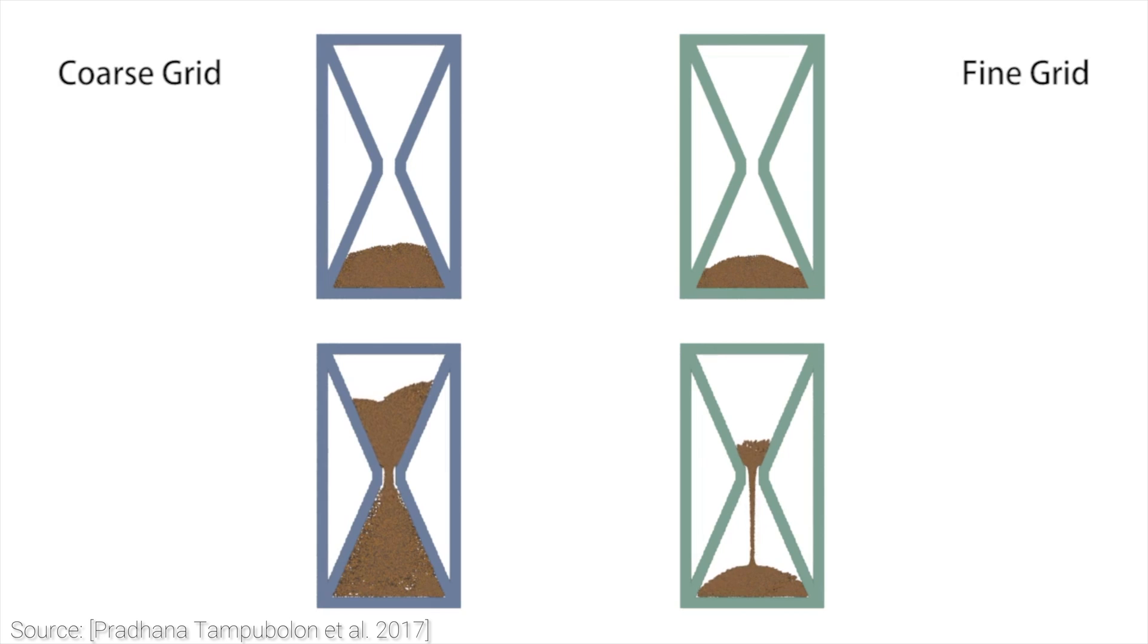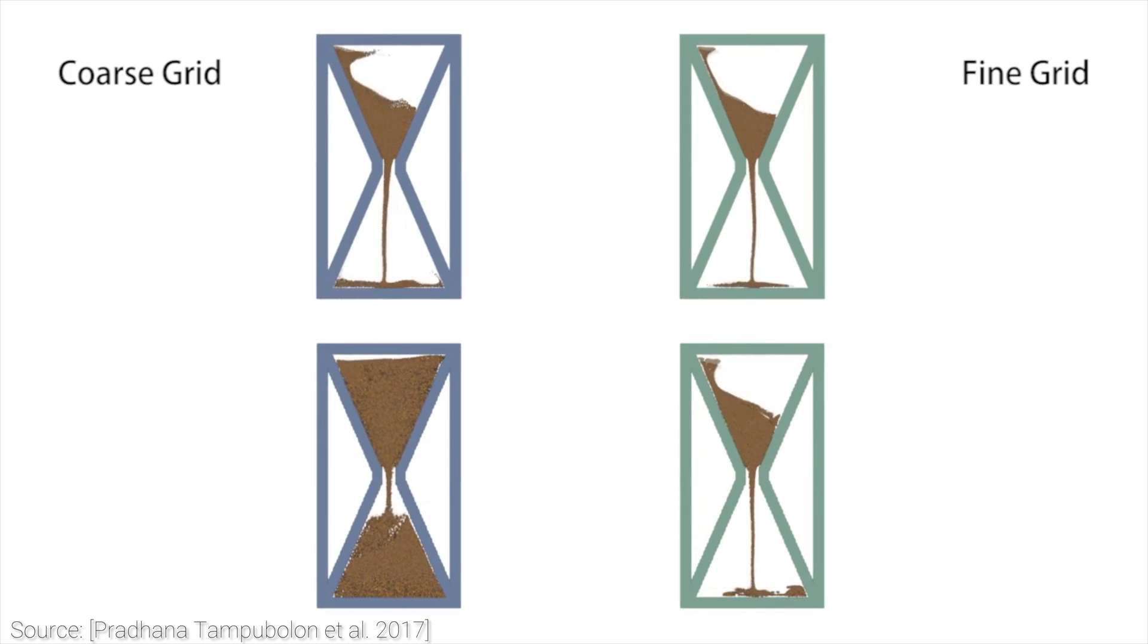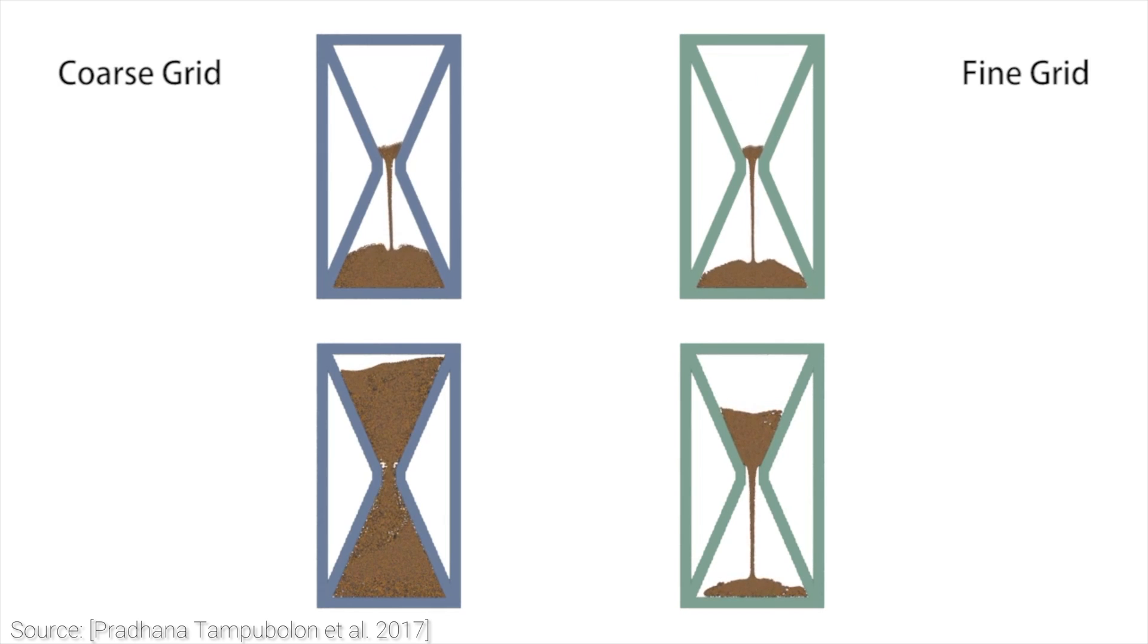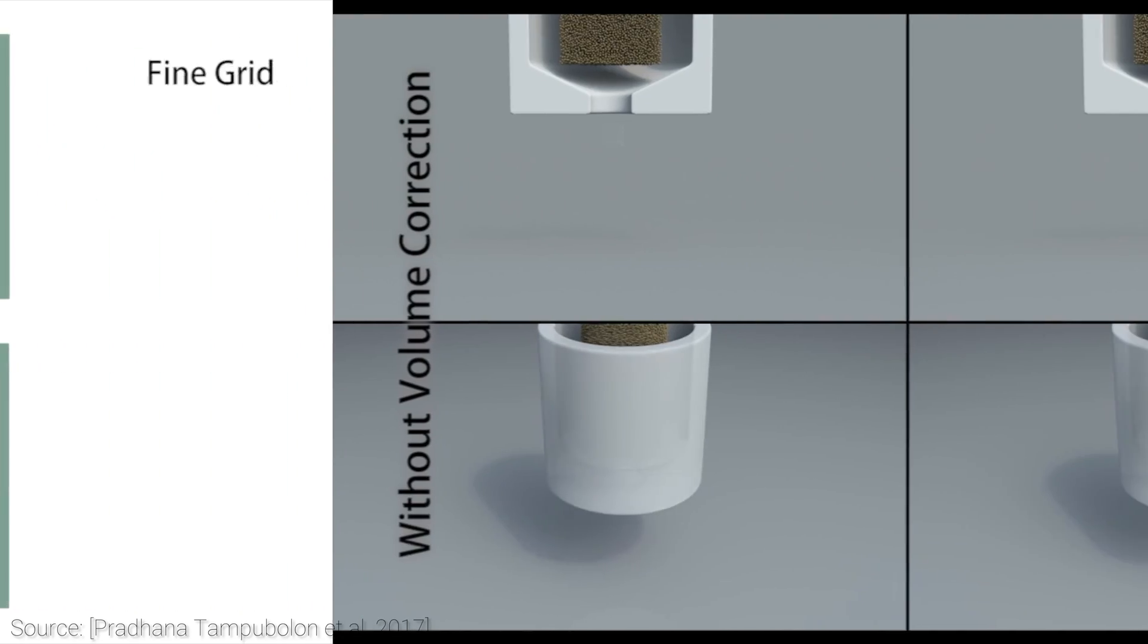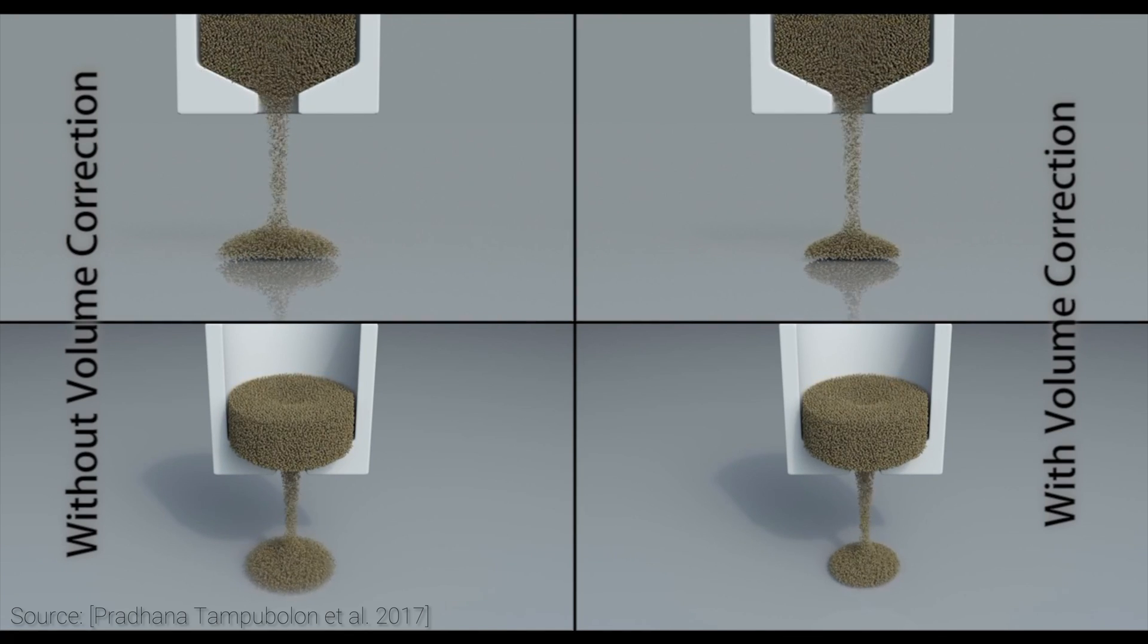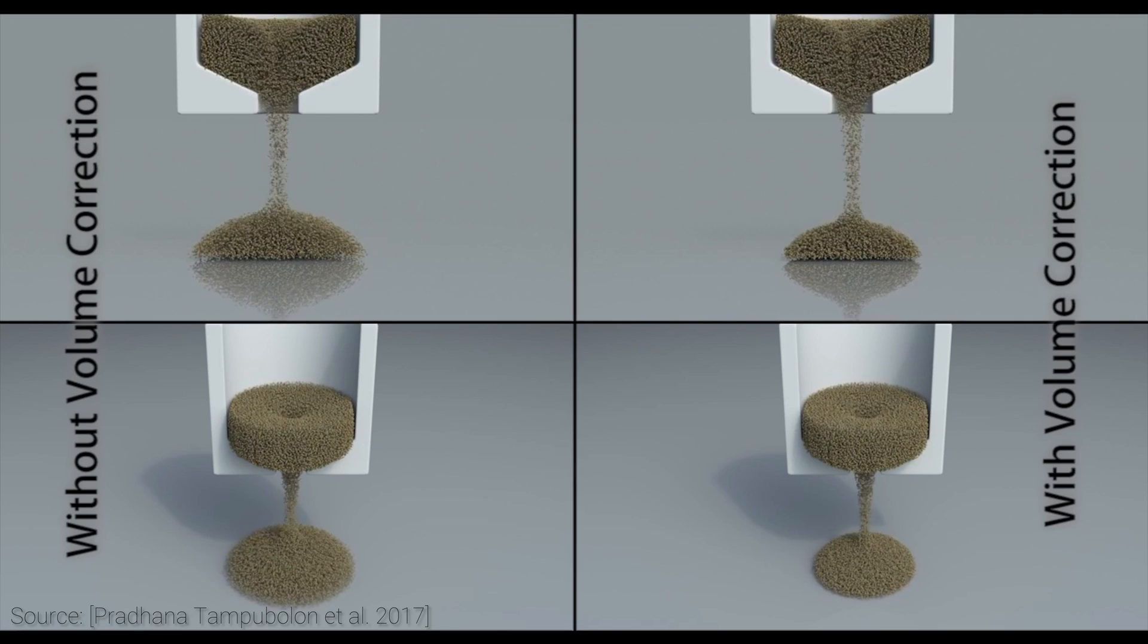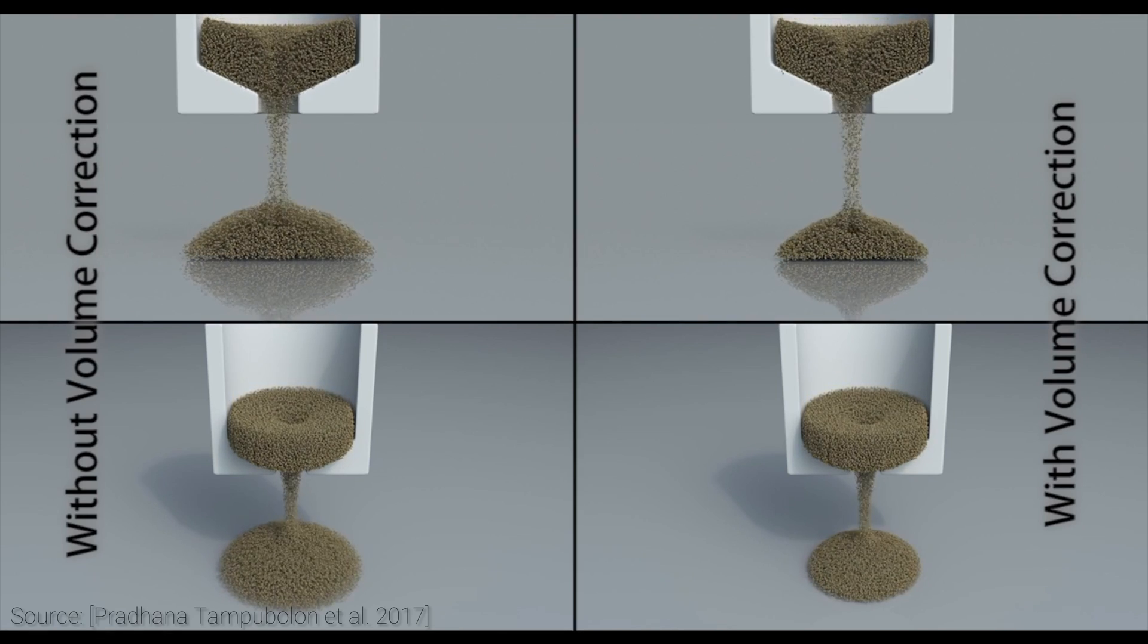This is particularly interesting because normally, in classical fluid simulations, if our grid resolution is insufficient, we typically encounter water-volume dissipation, which means that the total amount of mass in the simulation decreases over time. Here we have the exact opposite, like in a magic trick, after every turn, the volume gets inflated.